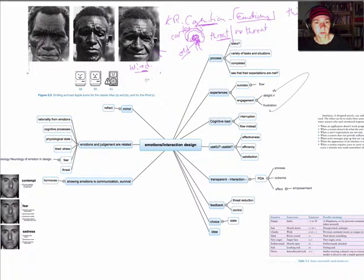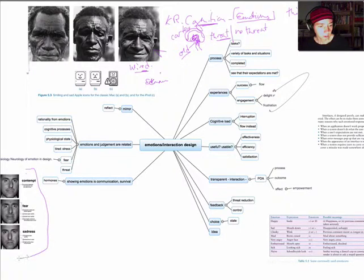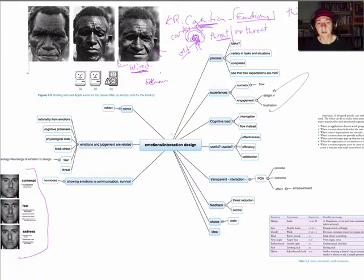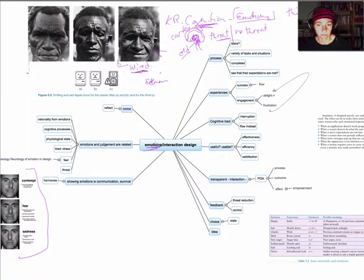Work by Paul Ekman showed that all of these responses are pretty similar across cultures, which again suggests that we're wired to have them for survival. We are showing our friends, our tribe, or our foes how we feel and what we think as part of our response to a situation. Our emotional responses to an interaction design are not irrational — they're very primitive and have been used for survival responses.